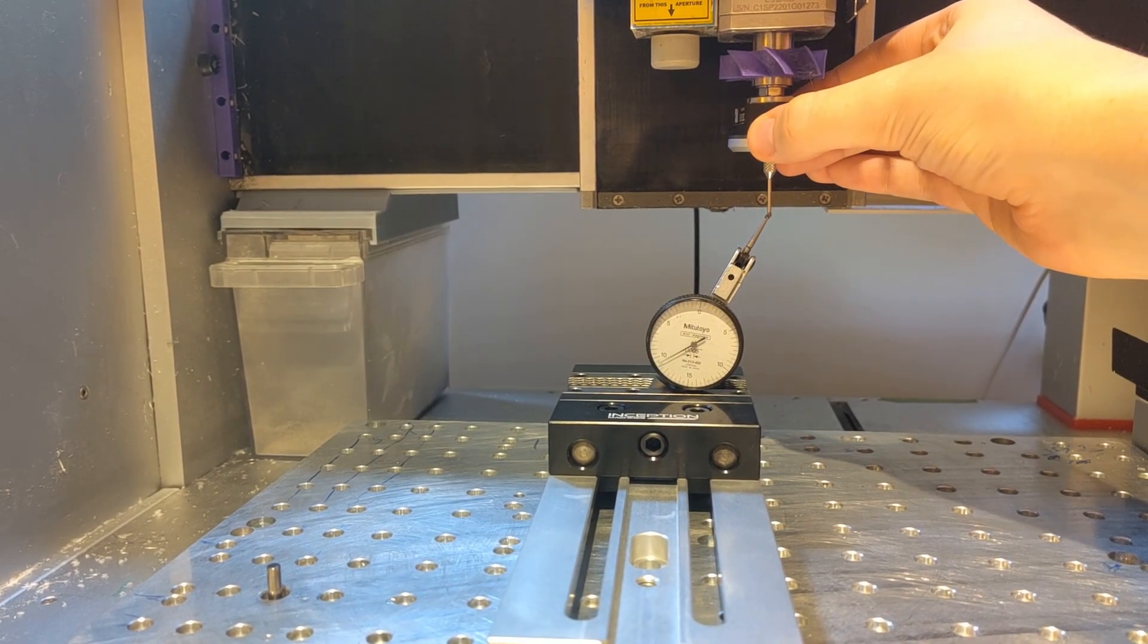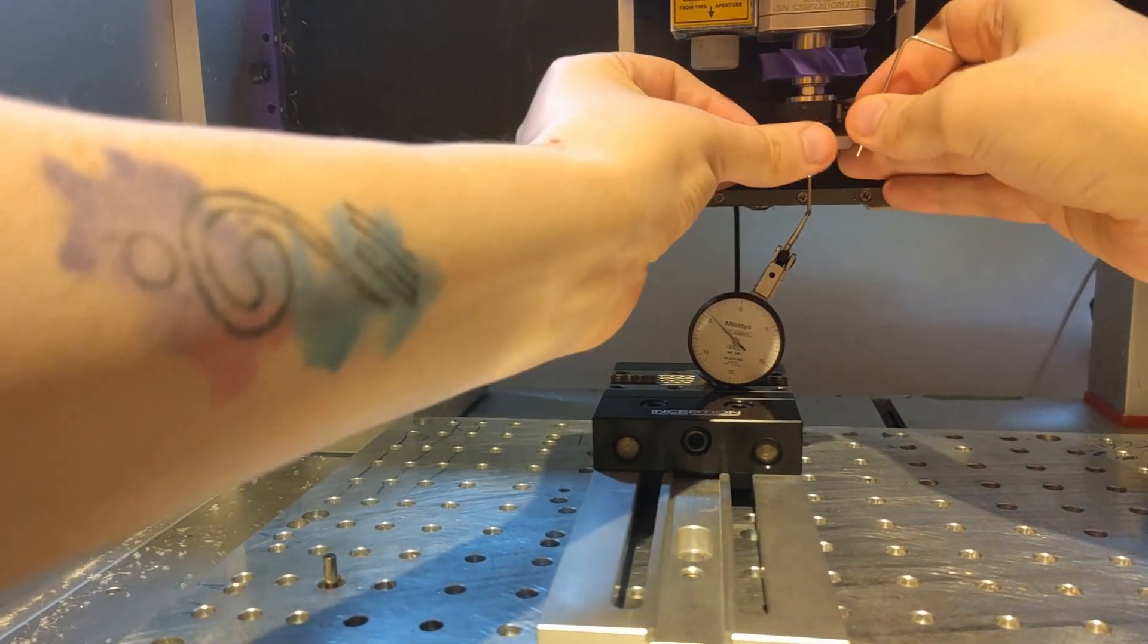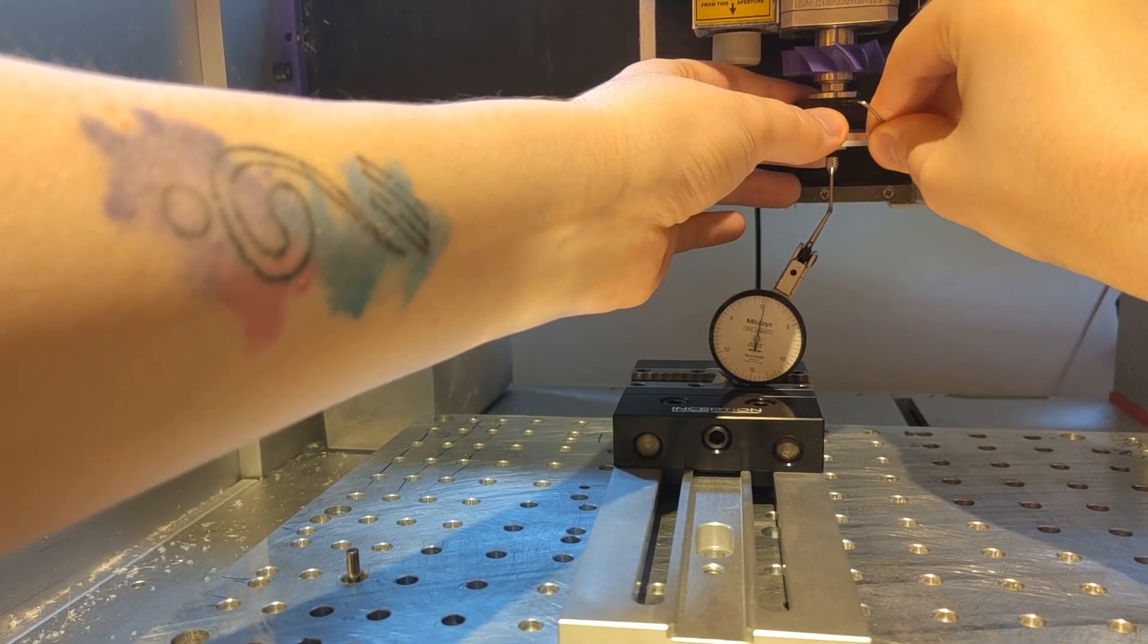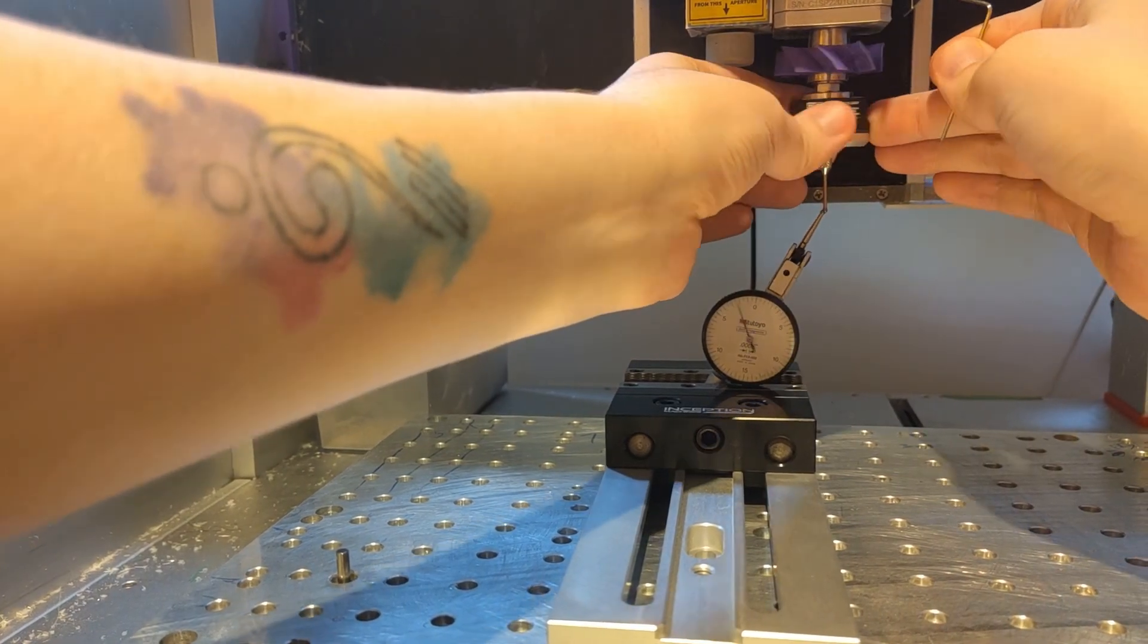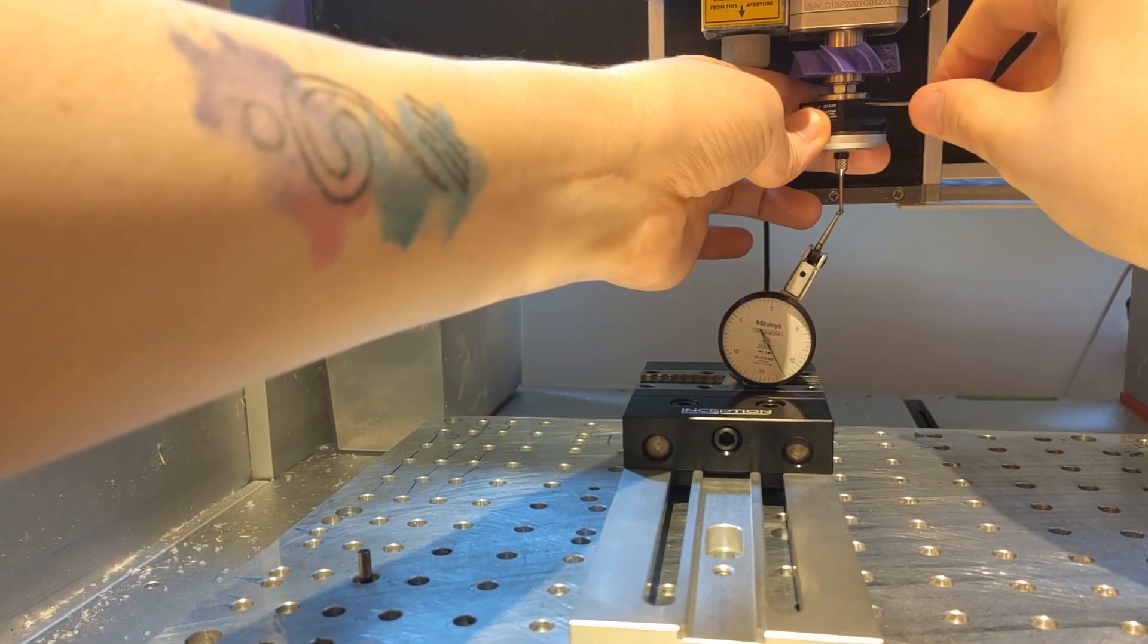Then rotate the probe around until you find the highest spot and use the hex wrench to loosen the set screw opposite the high spot and tighten the set screw in line with the high spot. Continue finding the high spot and adjusting until you are happy with the amount of movement on your dial test indicator when rotating the probe.